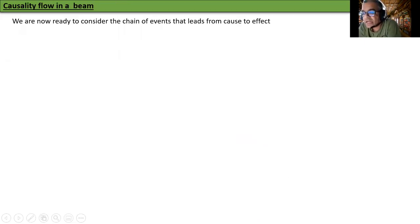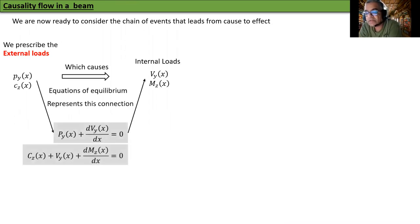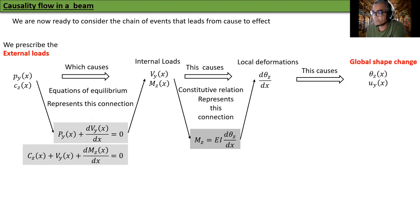We are now ready to consider the chain of events that leads from cause to effect. We prescribe the external loads, PY and CZ. These cause internal loads, VY and MZ. Equations of equilibrium represents this connection between PY, CZ and VY, MZ. The internal loads cause local deformations, d theta z dx. The constitutive relation represents this connection, MZ equals EI d theta z dx. This causes shape change, theta z versus Y. And kinematics represents this connection, theta z equals dUY/dx.